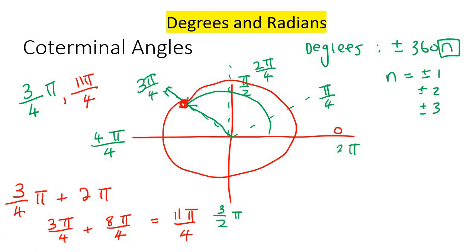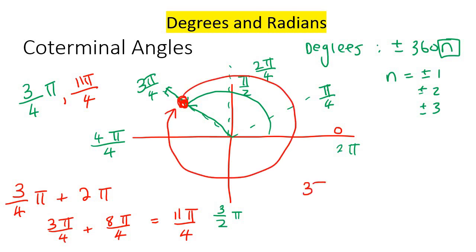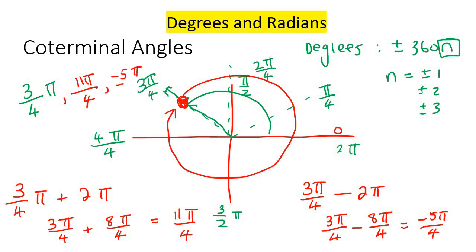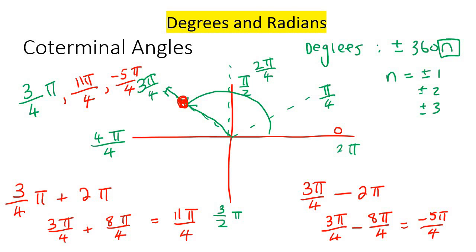We could also go backwards — go 2 pi backwards. So 3 pi over 4 take away 2 pi, using a common denominator, gives you negative 5 pi over 4. So that's a different coterminal angle. As with degrees, you could add even more 2 pi's — 4 pi, 6 pi, 8 pi, 10 pi — as long as it's a multiple of 2 pi. You could also subtract. So when working with radians and coterminal angles, you can add or subtract any multiple of 2 pi.